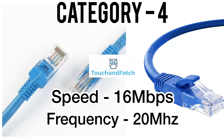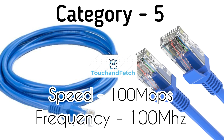The next one is Cat4. Cat4 is called Category 4 cable. Speed: 16 Mbps, frequency: 20 MHz. Since both speed and frequency are low, it can only handle low-speed networks and is not used currently, as we have moved to better cable upgrades.